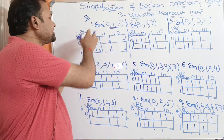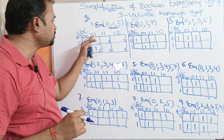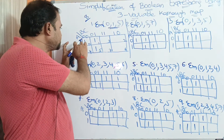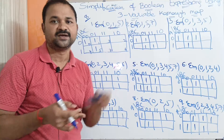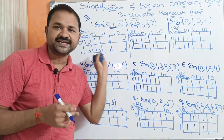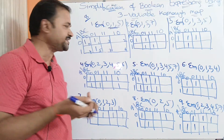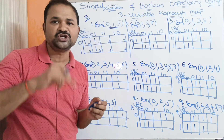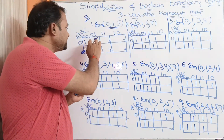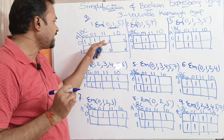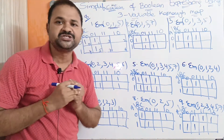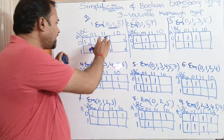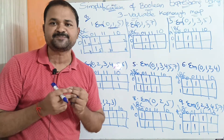The right-hand side columns are B and C, with possible combinations 00, 01, 11, 10. The first cell (0,00) represents A-bar B-bar C-bar, which in decimal is minterm 0. The next cell (0,01) gives A-bar B-bar C — minterm 1. The cell (0,11) gives A-bar B C — minterm 3. The cell (0,10) gives A-bar B C-bar — minterm 2.